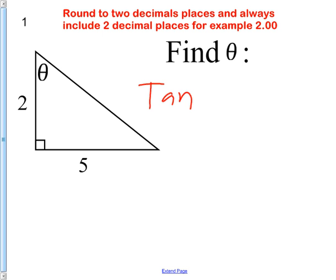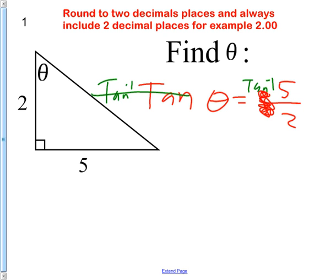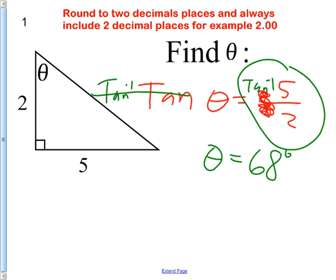So tangent of theta equals opposite over adjacent, which would be five over two. There's your equation. And then you take inverse sine of both sides. And your answer is theta equals what? 68 degrees-ish.